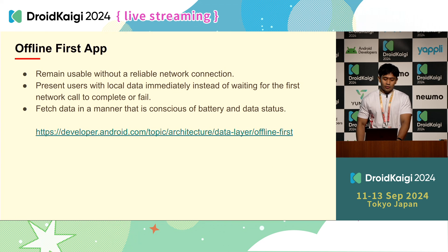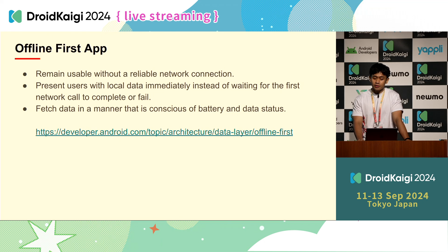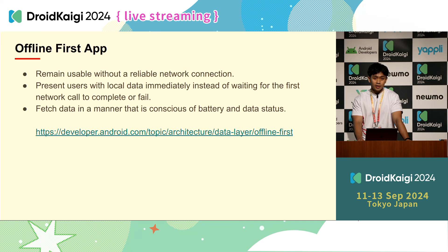Let's move on to the offline-first app. The offline-first app definition by Android documentation is an app that can do three things: first, remain usable without a reliable network connection; second, present users with local data immediately instead of waiting for the first network call to complete or fail; and third, fetch data in a manner that is conscious of battery and data status.